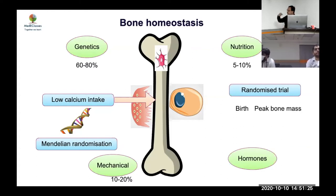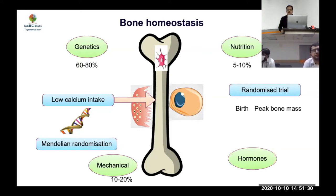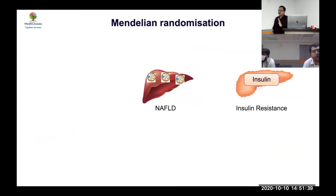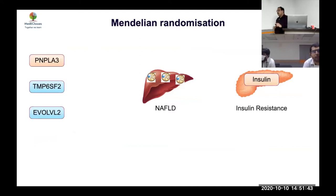This is why the specific paper was chosen — Mendelian randomization is going to appear more and more as a way to identify pathophysiology. The basic question in this paper is: is NAFLD causing insulin resistance? We need to understand whether there are any genetic predisposers to NAFLD.